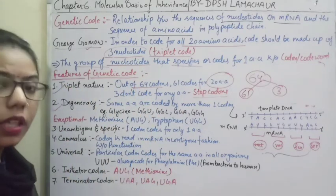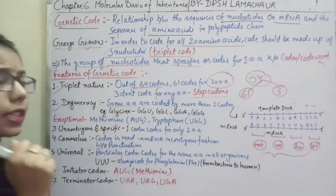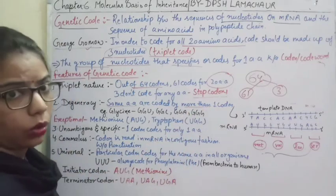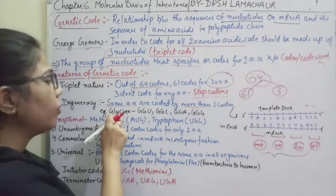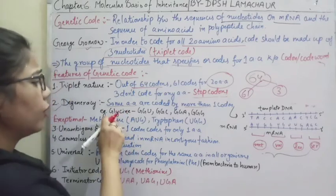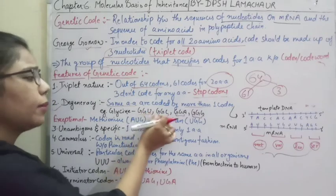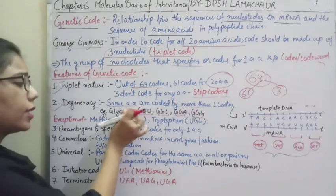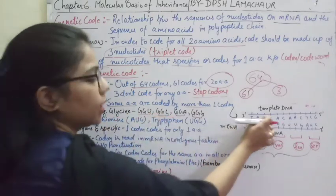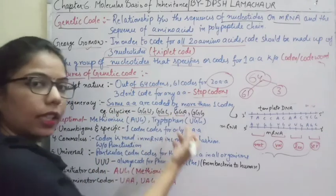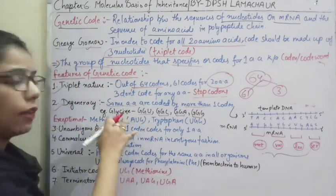The second feature is degeneracy. This means that some amino acids can be coded by more than one codon. For example, glycine has different codes — GGU, GGC, GGA, GGG — and all of them code for glycine. So if GGU or GGC or GGA is present in the mRNA, in each case you will say it is glycine. Some amino acids can be coded by more than one codon.